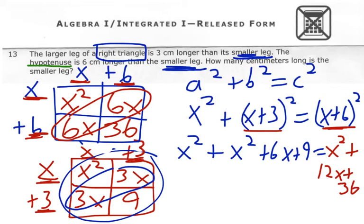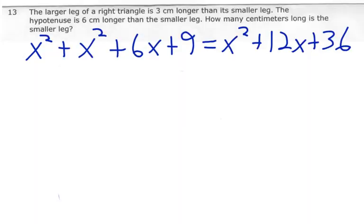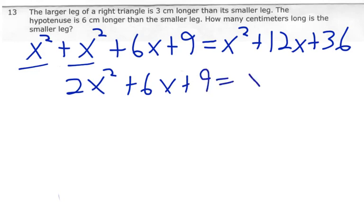And I ran out of room there. So I'm going to rewrite that a little more neatly. And I'm going to try to get everything on one side of that equation. So let's go ahead and combine our like terms first before we move stuff over to one side to solve it for zero. So x squared plus x squared is going to give us 2x squared plus 6x plus 9. And the other side it looks like is already simplified. So there are no like terms on the other side.